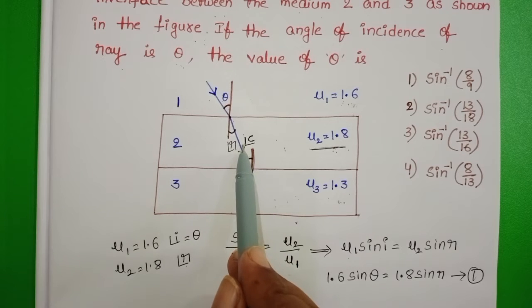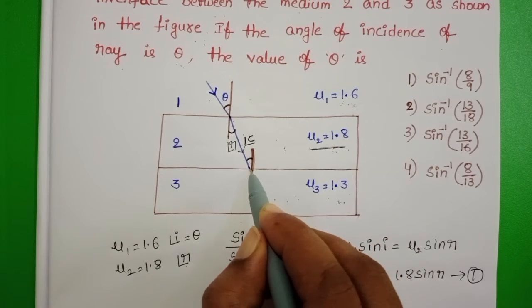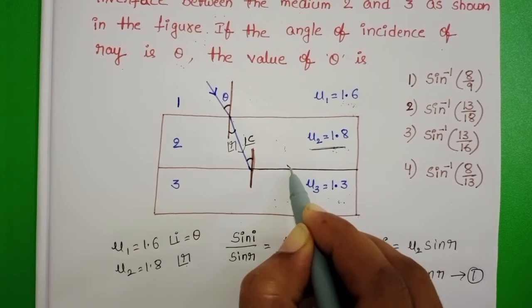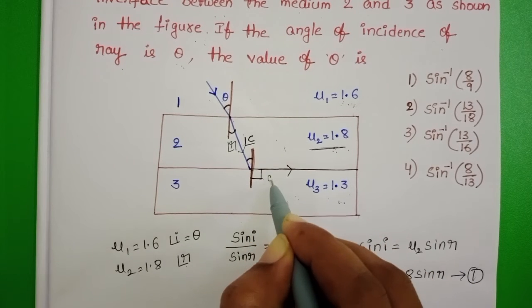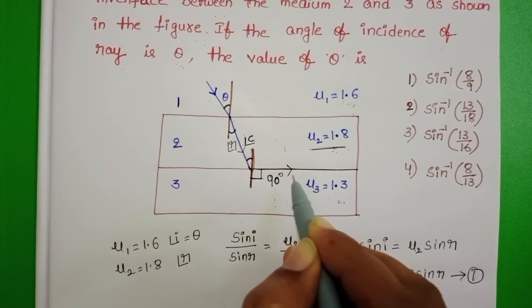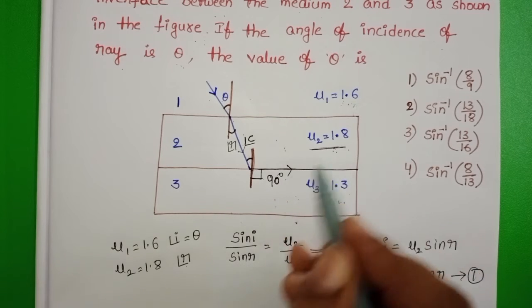For the critical angle of incidence, refracted ray grazes along the interface. So here angle of refraction equals 90 degrees. Here also, apply the Snell's law.